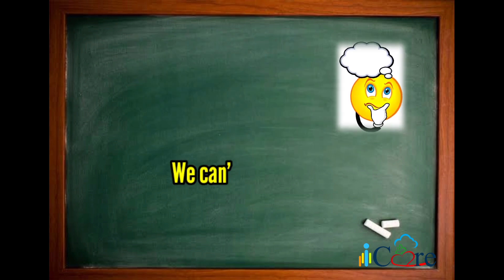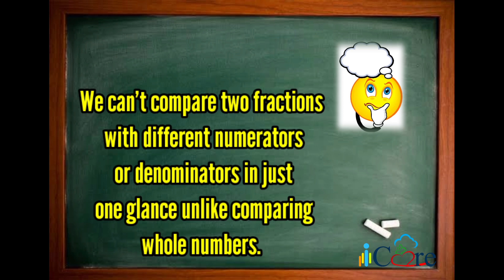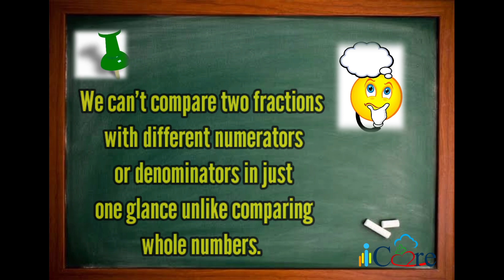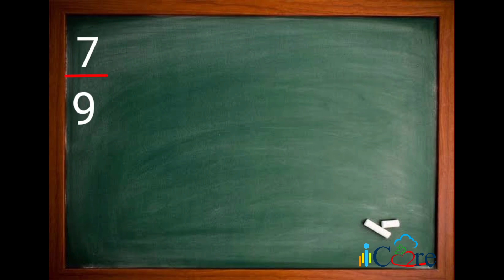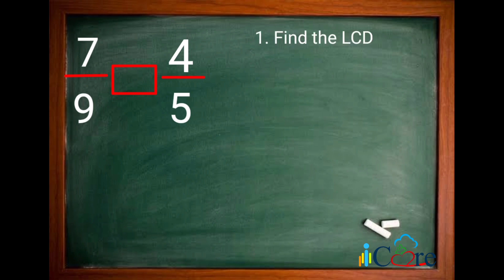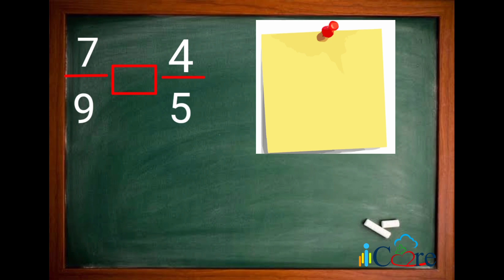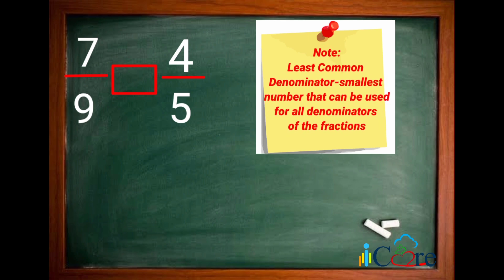However, we can compare two fractions, especially with different denominators or numerators, in just one glance, unlike comparing whole numbers. Let's try this example: 7 ninths, or 7 over 9, and 4 fifths, or 4 over 5. The traditional method of comparing fractions involves finding a common denominator. Let's first find the LCD — think of the least number that can be divided by the two denominators, 9 and 5.